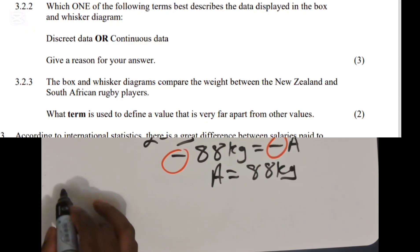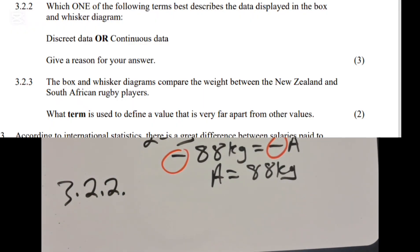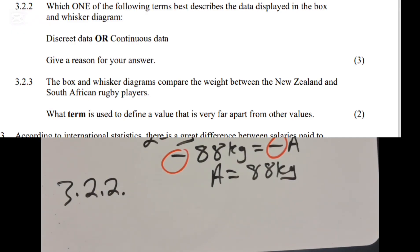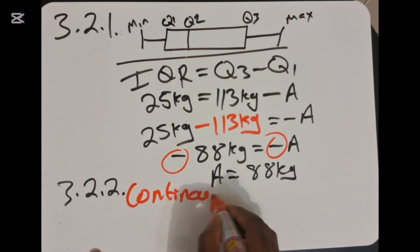Moving to the next question, which is 3.2.2, it says which one of the following terms best describes the data displayed in the box and whisker diagram: discrete data or continuous data. What you need to know is to be able to differentiate between the two. We said discrete data is data that is collected through counting. Continuous data is data that is collected through measuring. Obviously, a weight of a person you must measure. You cannot count a person's weight.